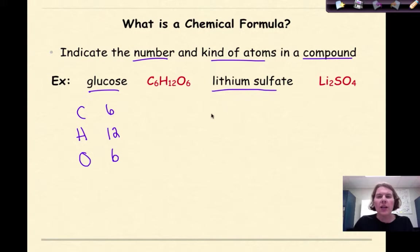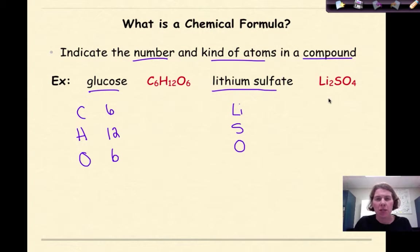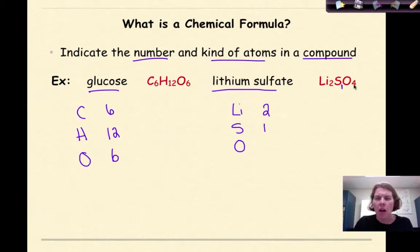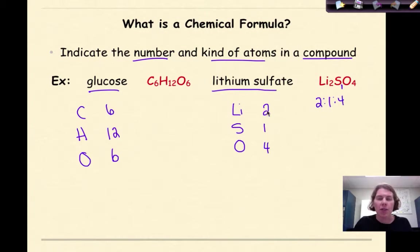If I look at lithium sulfate, which is Li2SO4, this compound is made up of lithium atoms, sulfur atoms, and oxygen. The subscript tells me how many of those atoms I need: two atoms of lithium, an assumed one sulfur, and four oxygen atoms. So the ratio is two to one to four. A chemical formula tells you the type of elements involved and the number of those elements needed to make that particular compound.